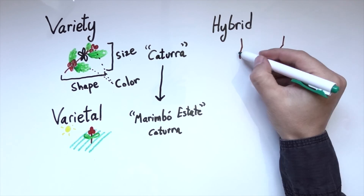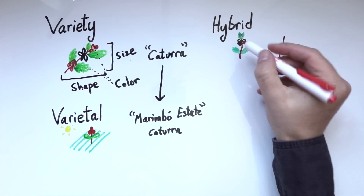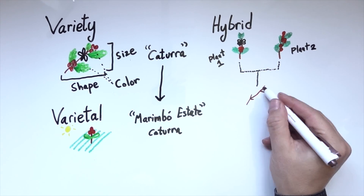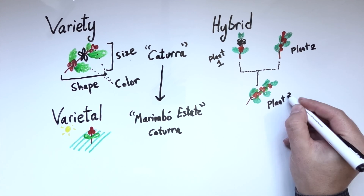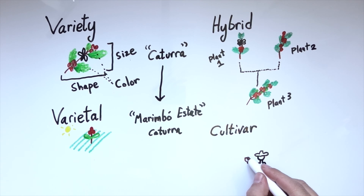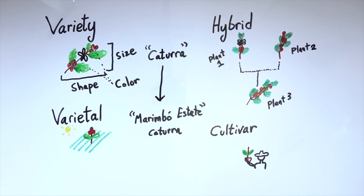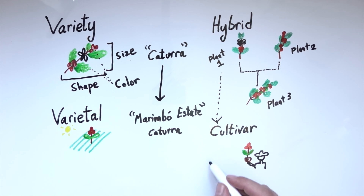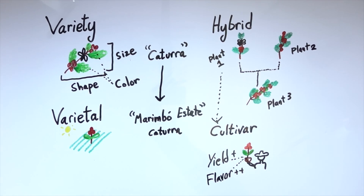Hybrid. A hybrid is a naturally occurring or man-made combination of two plants of different variety, which leads us right to a cultivar. A cultivar refers to a specifically human-selected hybrid plant. In coffee, cultivars are often created by cross-breeding different varieties to create new hybrids with desirable traits, such as yield, disease resistance, and superior flavor.